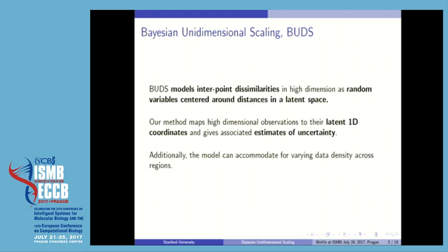The method is called Bayesian Unidimensional Scaling and it is based on the idea of modeling the interpoint dissimilarities — the pairwise dissimilarities computed on your original data — as the realization of the true underlying distance in the latent one-dimensional space. You can think of BOTS as a method for mapping high-dimensional observations to their latent 1D coordinates.